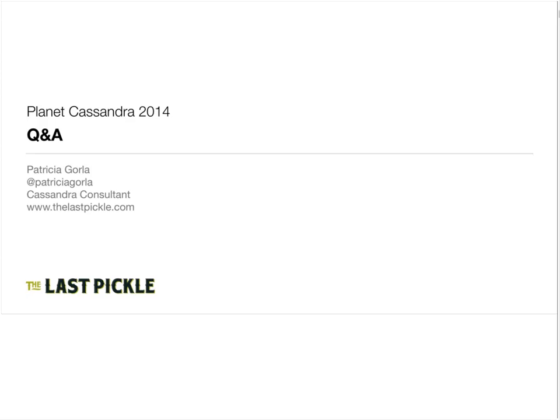Sriram asks: how is a JSON stream handled in Cassandra bulk load? I'm not sure I understand the question — could you add more detail to that?